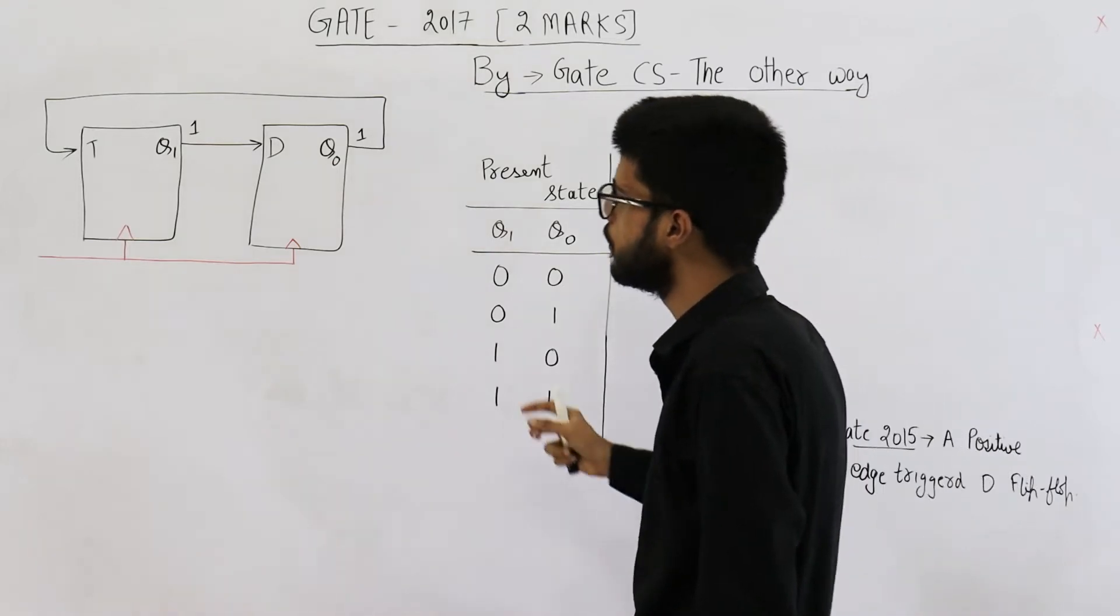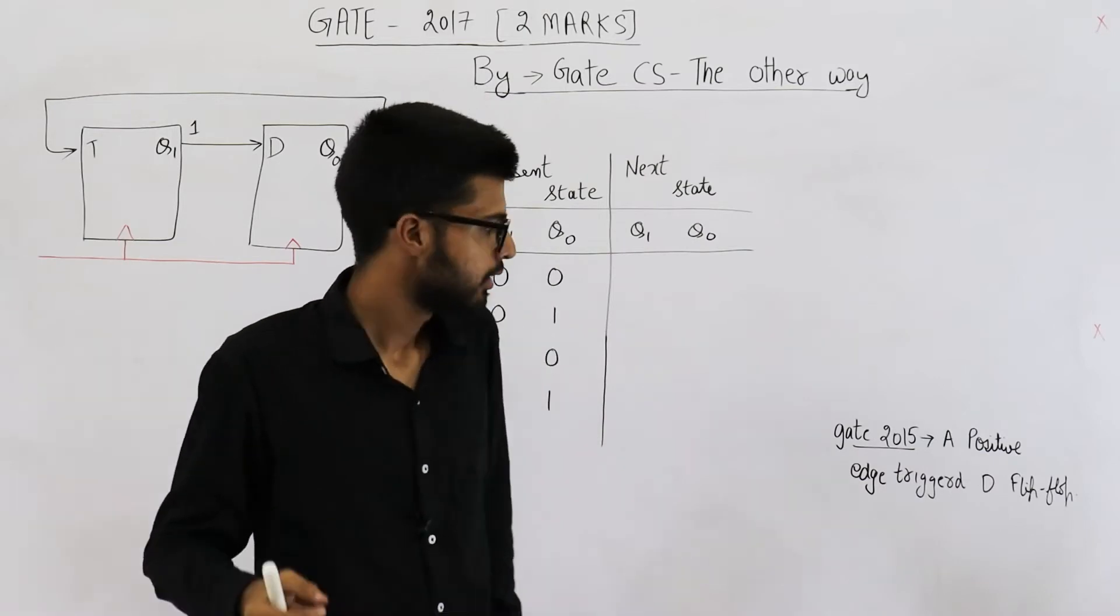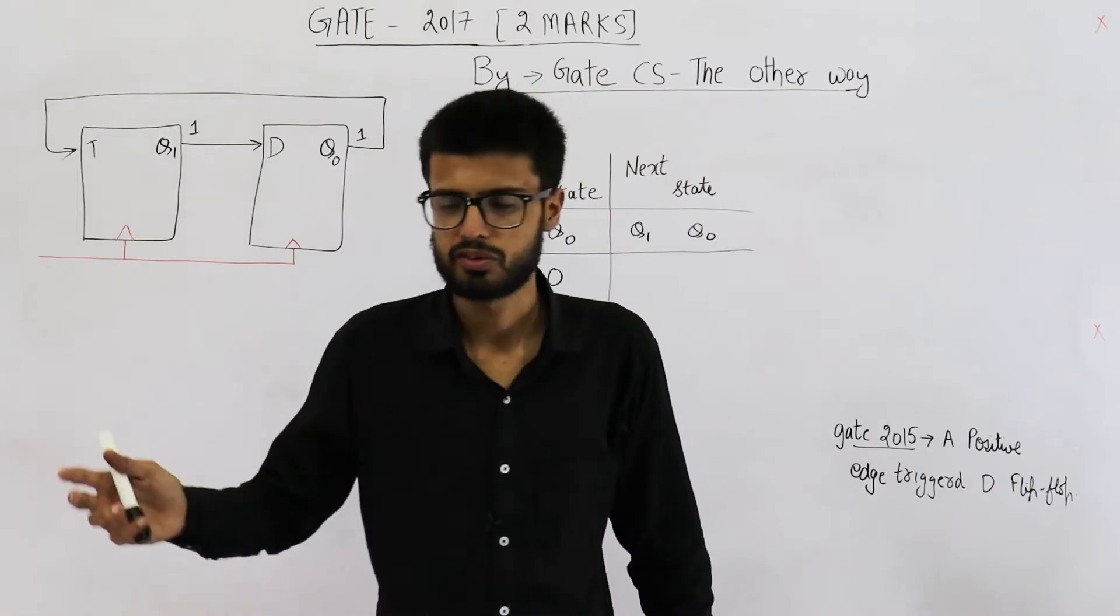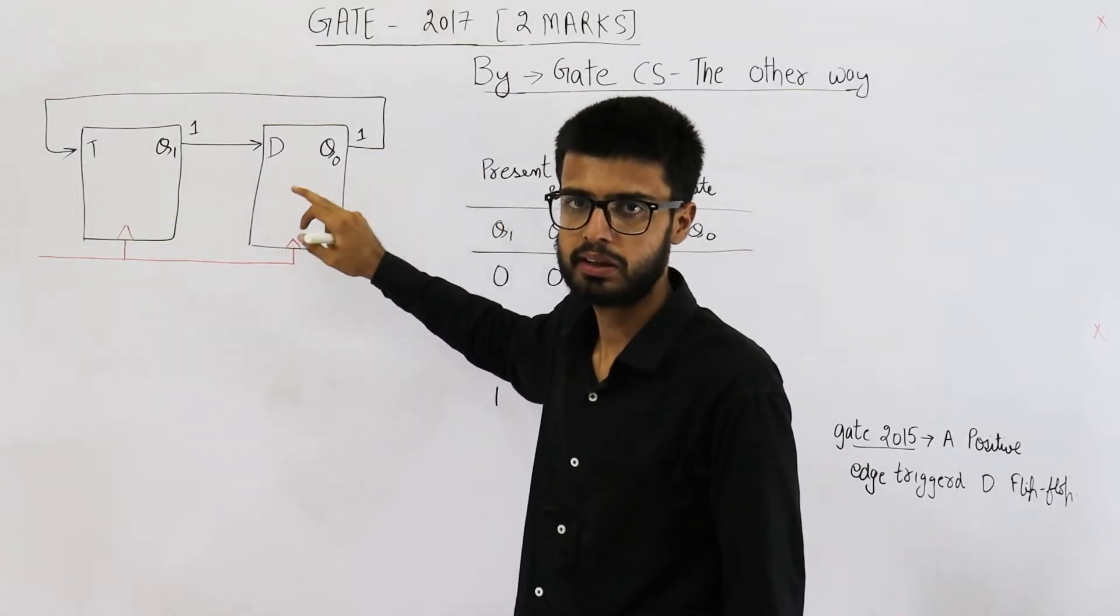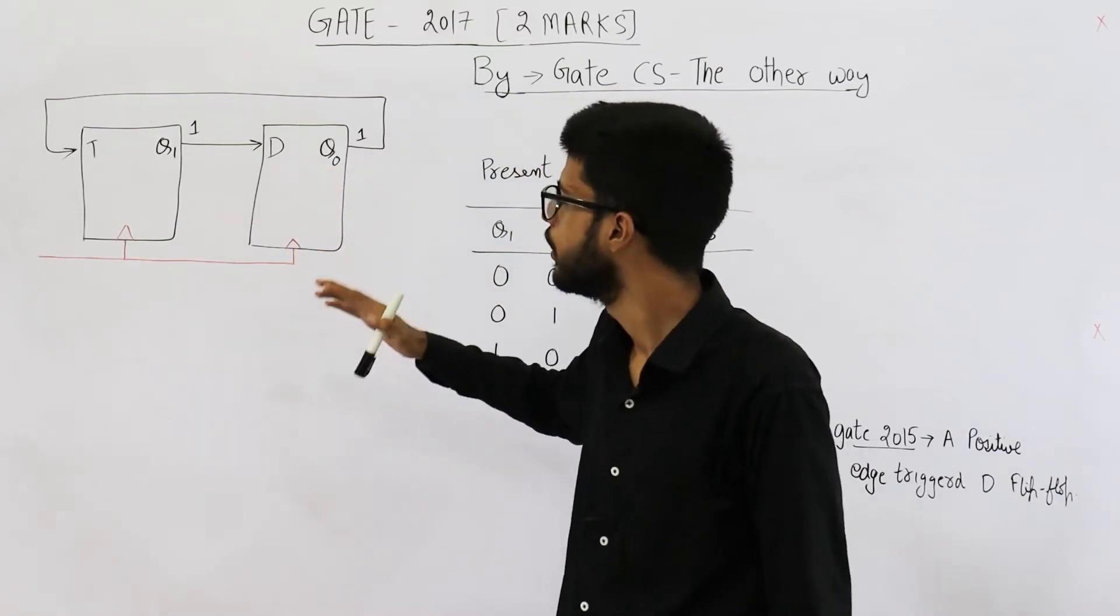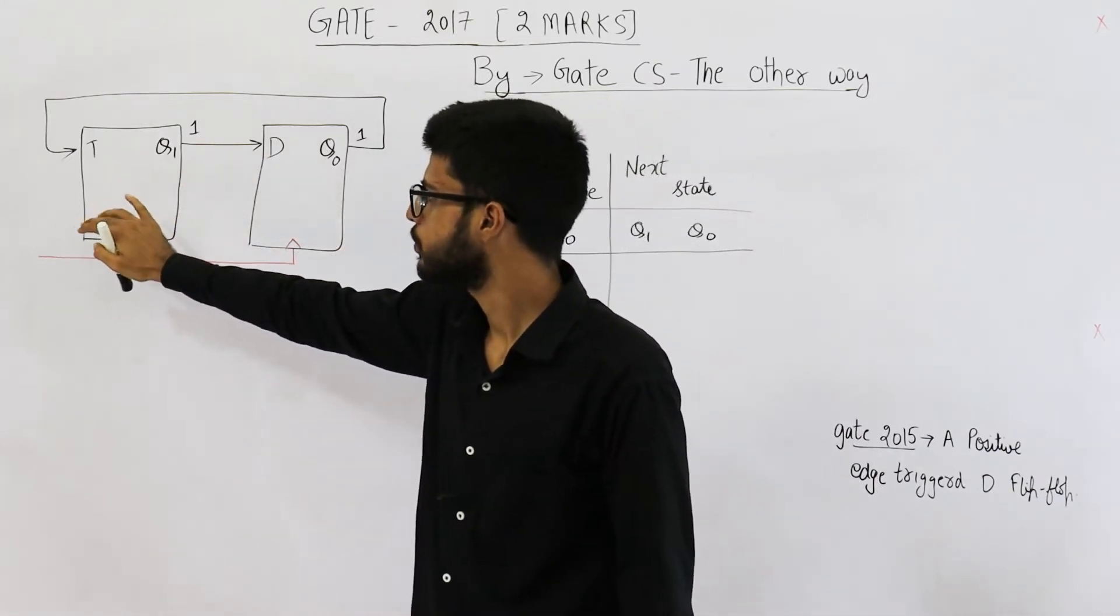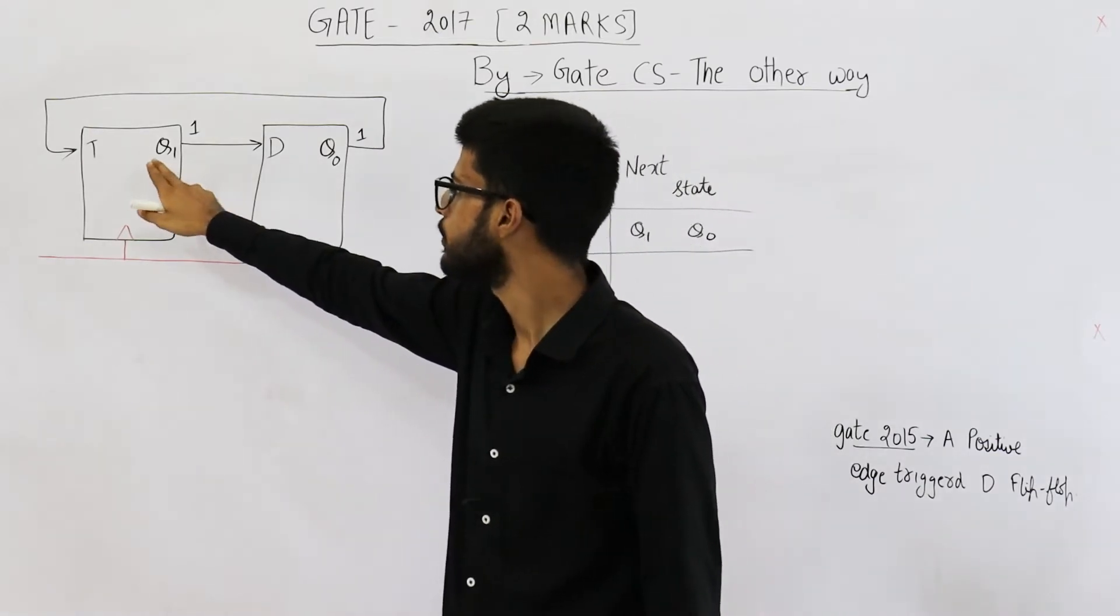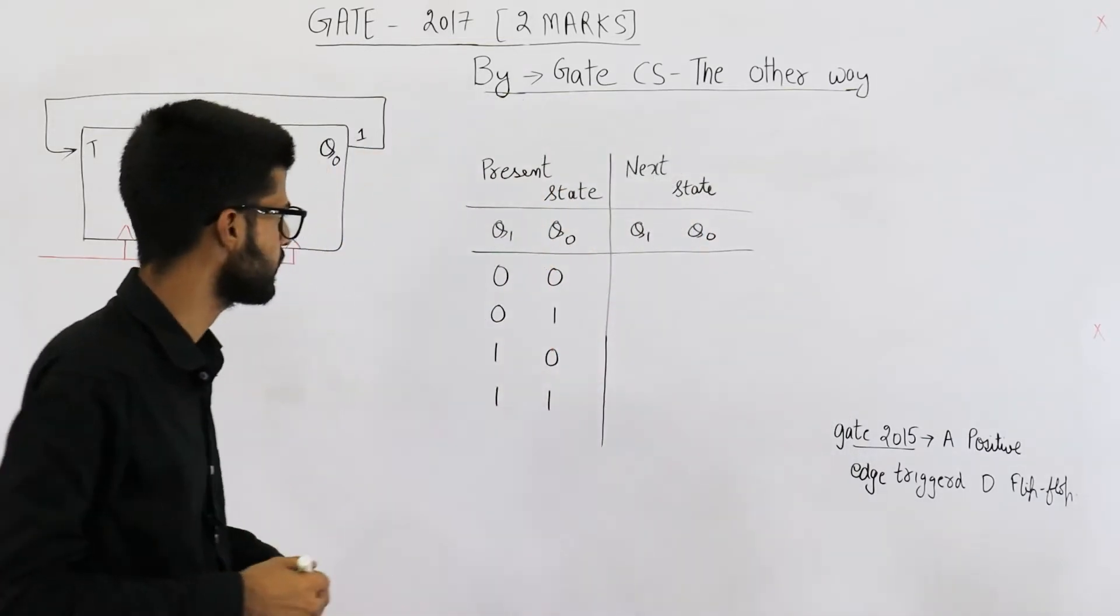Now if you remember, we have solved a similar question from GATE 2015 exam. The beginning of the question was something like this: a positive edge triggered D flip-flop and so on. In that question, we used one D and one JK, but the JK flip-flop was acting as a T flip-flop only. So the diagram was almost similar. Just this D was placed on this side and T was placed on this side, but that doesn't actually matter because output of one flip-flop is given to the other. So both of these questions are similar.